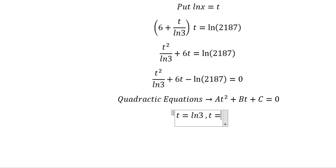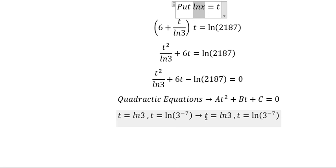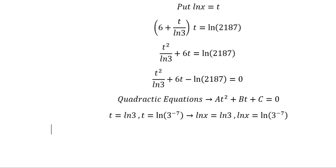That is t equals ln(3), and the second one, t equals ln(3^-7). We know that t is ln(x), so I will put this here and here. In this situation we can find the value of x.